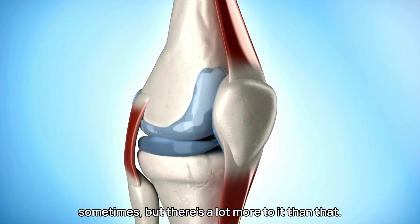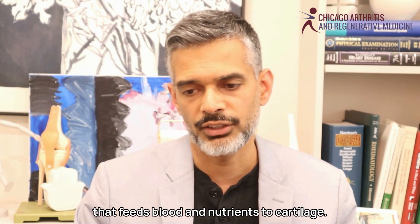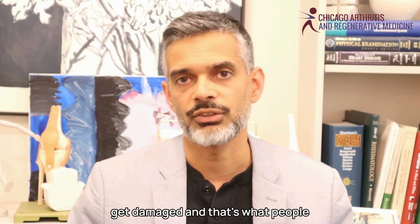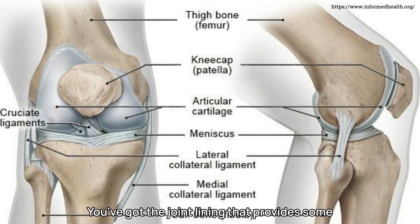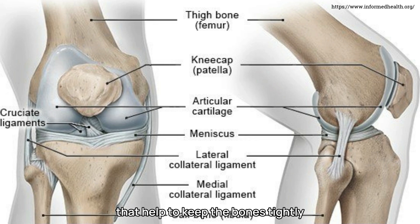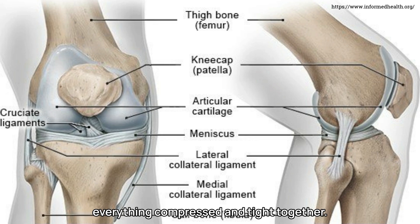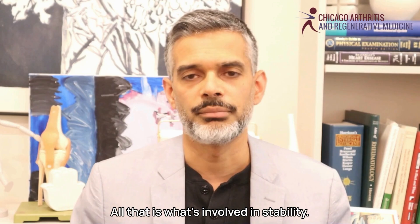People just think of the cartilage or the joint lining sometimes, but there's a lot more to it. The structures involved in the knee joint include the bone, the subchondral bone that feeds blood and nutrients to cartilage, the cartilage itself, the joint lining, the meniscus that works as a buffer within the joint, the ligaments that help keep the bones tightly connected together, tendons and muscles that provide power and support and control, myofascial tissue that helps keep everything compressed and tight together, and subcutaneous tissue and skin. All of that is what's involved in stability — and that's what biotensegrity is.